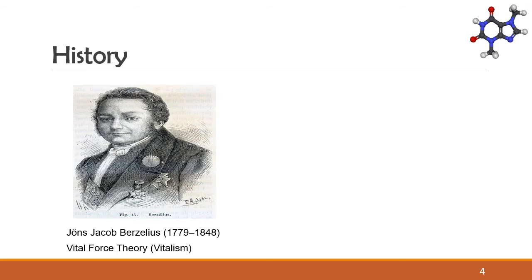The term organic chemistry was coined by the Swedish physician Jöns Jacob Berzelius in 1806. He gave this branch of chemistry the name organic because, in those days, chemists believed that the group of compounds they considered organic could only be derived from biological materials. This belief led to what was called the vital force theory, or vitalism.